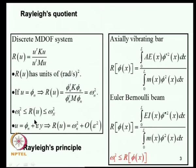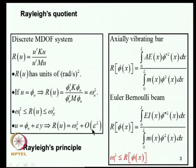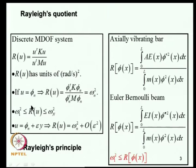Rayleigh's quotient is bounded between the first and last eigenvalue. Moreover, if the vector U is in the neighborhood of the true eigenvector φ_N — that is φ_N plus ε·Y — then Rayleigh's quotient will be in the neighborhood of the natural frequency with an error of order ε². As U varies, R(U) reaches stationary values near the true eigenvectors and its minimum when U coincides with the first eigenvector. This is Rayleigh's principle, and its main application is to estimate the first natural frequency using simple approximations to the first mode shape.